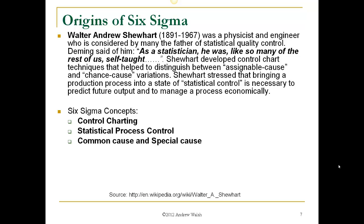Another very important name is Walter Shewhart. He was a physicist and engineer considered by many to be the father of statistical quality control. Dr. Deming said of him, 'As a statistician, he was, like so many of the rest of us, self-taught.' Shewhart developed control chart techniques that help to distinguish between what we call assignable causes and random or chance cause variation. He stressed that bringing a production process into a state of statistical control is absolutely necessary to predict future output and to manage your process economically. The concepts we owe to him are control charting, statistical process control, and common cause and special cause.